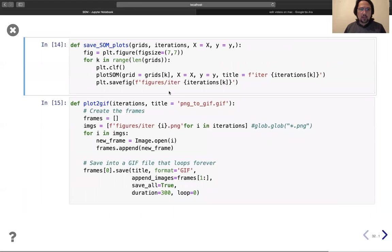So actually this function works here. As you see, it doesn't show the figure, but it saves the figure in this folder with this name: iteration, iterations k, whatever is 0, 10, 20, like that.